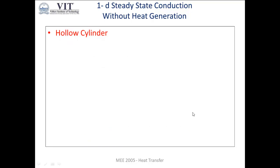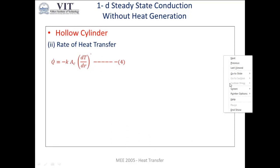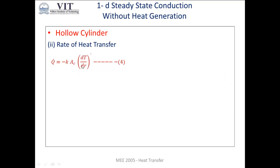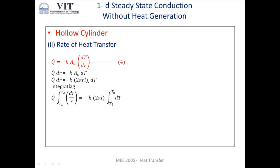The next parameter to determine is the rate of heat transfer. From Fourier's law of heat conduction: Q = −KA · dT/dR, since temperature varies with respect to the radial direction. For a hollow cylinder, the area A = 2πRL. Integrating between limits R1 to R2 on the left and Ti to T0 on the right, we get Q · ln(R) evaluated from R1 to R2 equals −K · 2πL · (T0 − Ti), giving Q · ln(R2/R1) = −2πKL · (T0 − Ti).